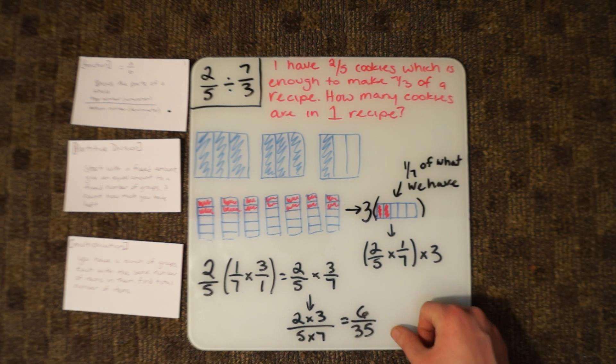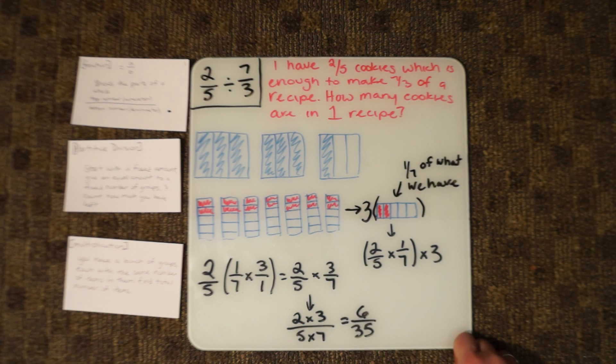The 6 is the numerator, the 35 is the denominator. So now we know that there are 6/35 cookies in one recipe.